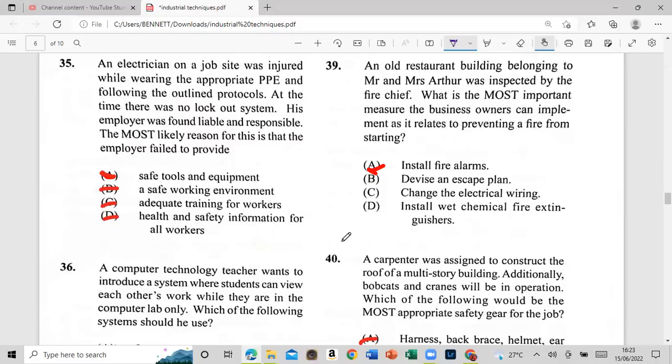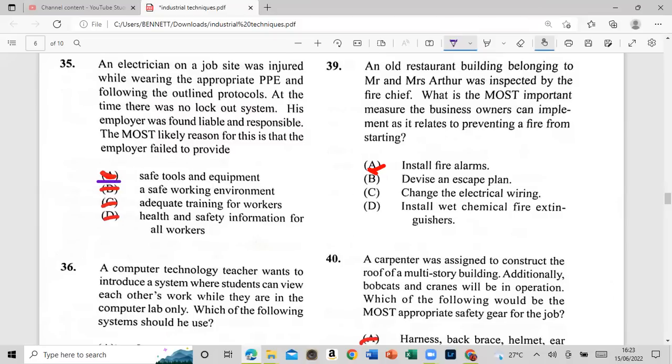35: an electrician on the job site was injured while wearing the appropriate PPE and following the outline protocol. At the time, there was no clock out system. His employer was found liable and responsible. Most likely reason for this is that the employer failed to provide A: safe tools and equipment, B: a safe working environment, C: adequate training for workers, or D: health and safety information for all workers. What was that, why you think? Now we're talking about A, 36.